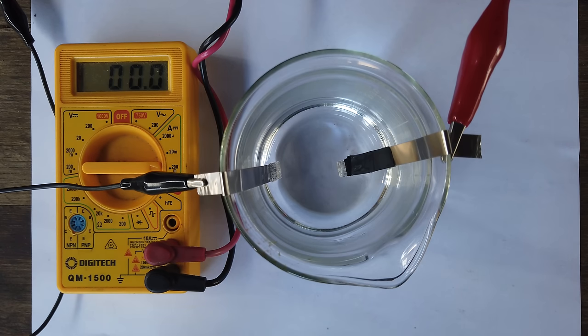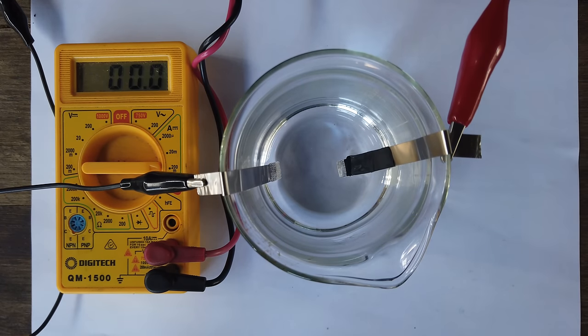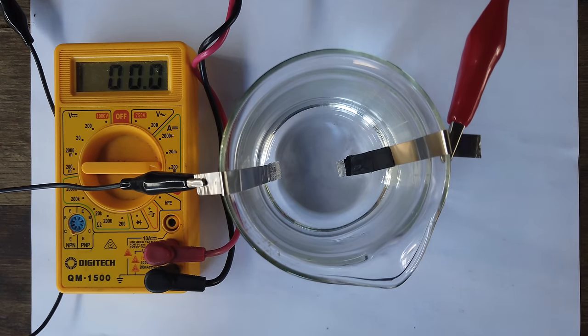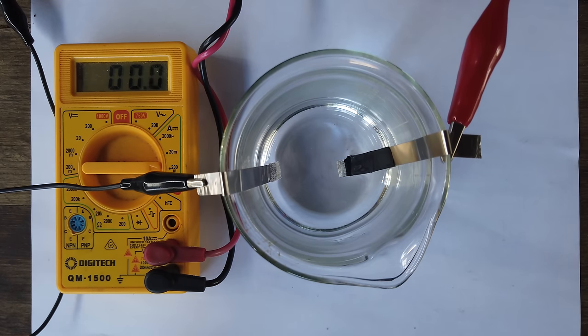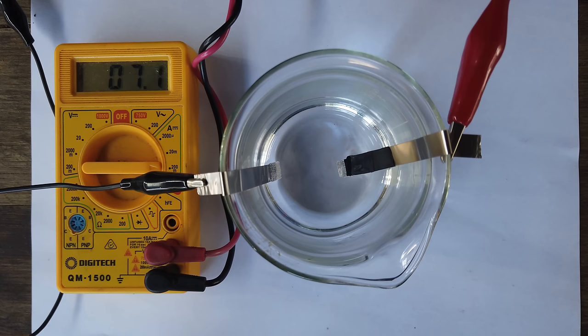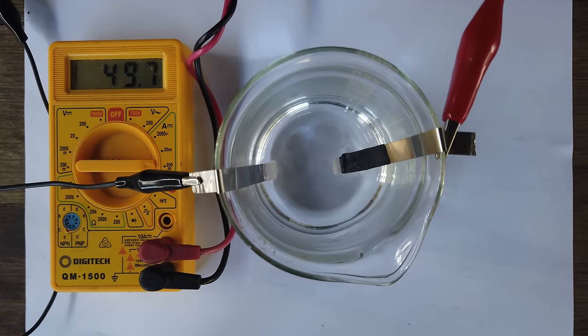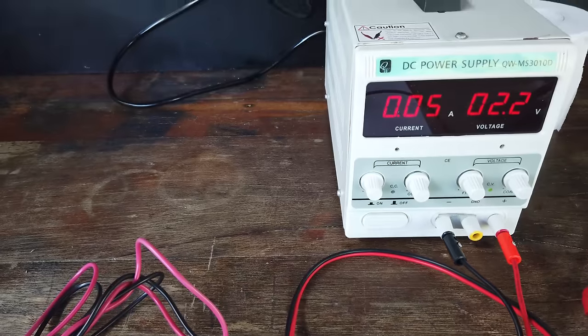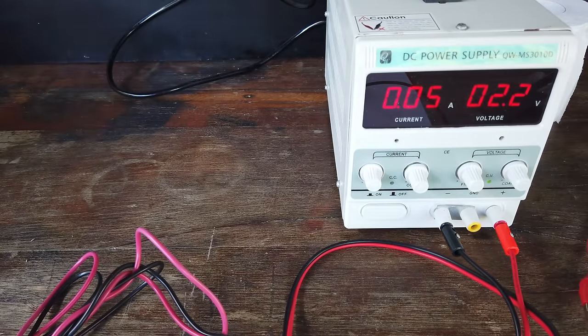This is the setup here. I have our nickel cathode that we're going to be using for all of the tests. We're using nickel as the anode for our first little experiment. I'm measuring current here, and I'm going to slowly increase the voltage until we see 50 milliamps flowing. About 50 milliamps flowing through the cell, and it takes about 2.2 volts to get that to happen on our nickel anode.